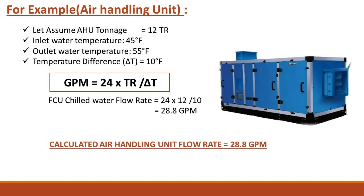For example, consider an air handling unit. Assume the AHU tonnage is 12 TR, with an inlet water temperature of 45°F and an outlet temperature of 55°F, giving a temperature difference ΔT of 10°F. Applying the formula: GPM = 24 × TR / ΔT = 24 × 12 / 10. The calculated air handling unit chilled water flow rate is 28.8 GPM.